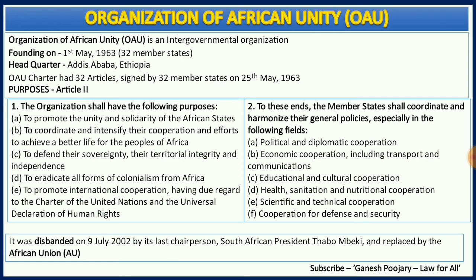Article 2 has two sub-clauses. The first sub-clause discusses five important purposes of the charter. Those purposes are: to promote the unity and solidarity of the African states; to coordinate and intensify cooperation and efforts to achieve a better life for the peoples of Africa; to defend their sovereignty, territorial integrity and independence; to eradicate all forms of colonialism in Africa; and to promote international cooperation having due regard to the UN Charter and the Universal Declaration of Human Rights of 1948.